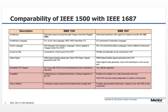We're going to look at IEEE 1500 and 1687 in terms of their comparabilities. From an architecture standpoint, 1500 uses a wrapper instruction register while 1687 uses a segment insertion bit. The language is described using CTL — core test language — for IEEE 1500, versus instrument connectivity language for 1687. The vector language used is STIL — standard test interface language — for 1500, while for 1687 a procedural description language, or PDL, is used.